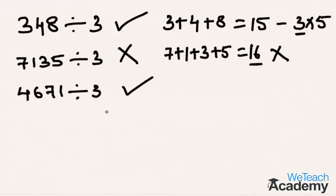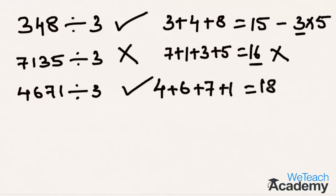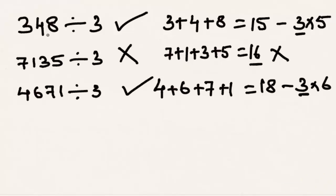Now for the last example, the sum of its digits is 4 plus 6 plus 7 plus 1, which equals 18. Now 18 is again exactly divisible by 3, that is 3 times 6 is 18. Since the sum of its digits is divisible by 3, hence we can say that a number is divisible by 3 if the sum of its digits is also divisible by 3.